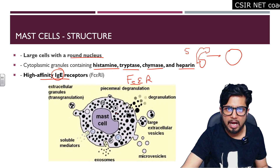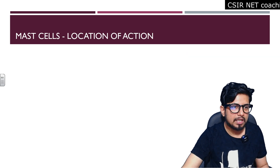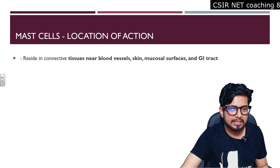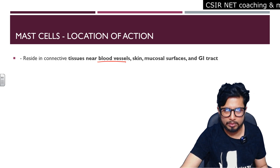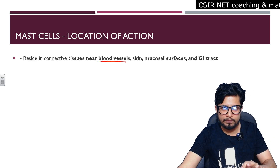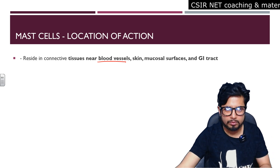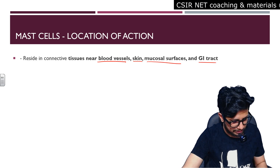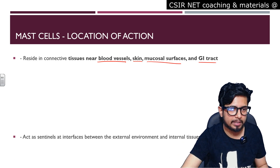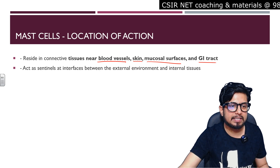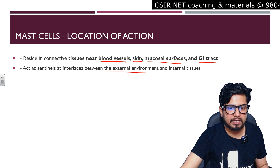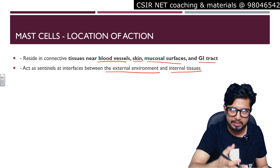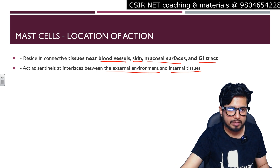Mast cells also have high affinity for the Fc epsilon receptor for IgE. Their location of action is in the tissues near blood vessels — in the skin, mucosal surfaces, and the gastrointestinal tract — where they act as sentinels at the interface between the external environment and internal tissues.